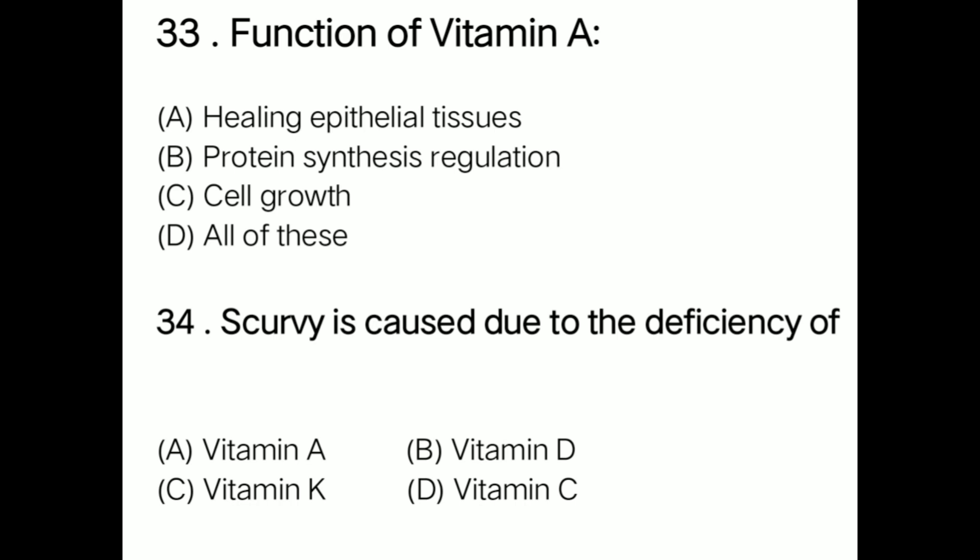Question: Functions of vitamin K are option A healing epithelial tissues, option B protein synthesis regulation, option C cell growth, option D all of these. Correct answer is option D: all of these. Functions of vitamin K include healing epithelial tissue, protein synthesis regulation, and cell growth.